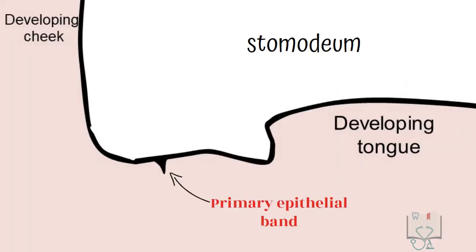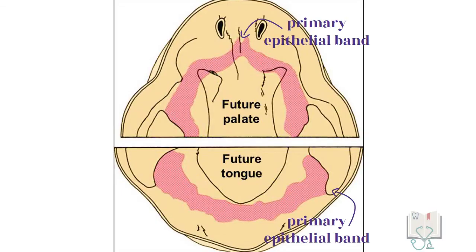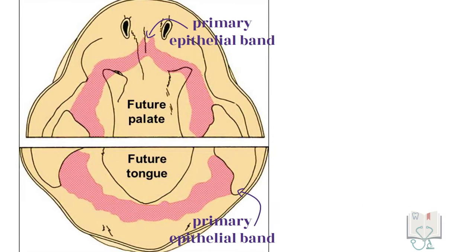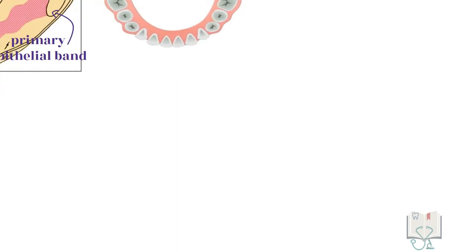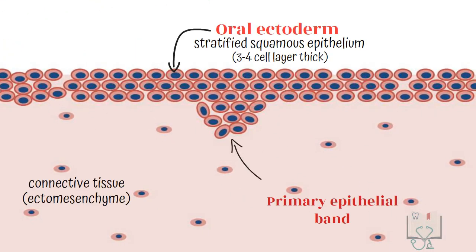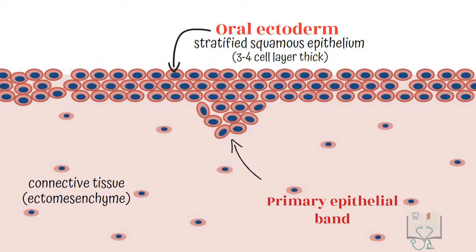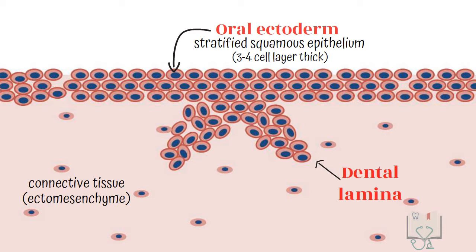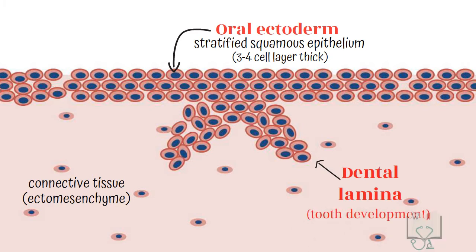This band is formed in between the developing tongue on one side and developing cheek and lip on the other side of the stomodium. This band is horseshoe shaped and determines the position of the future dental arch in maxilla and mandible. At about the seventh week, this primary epithelial band gives two subdivisions: the dental lamina, which helps in initiation of tooth development, and the vestibular lamina, which forms the vestibule.